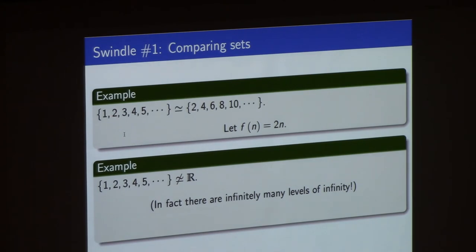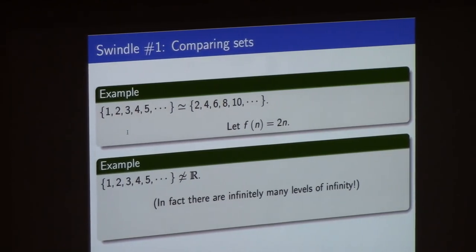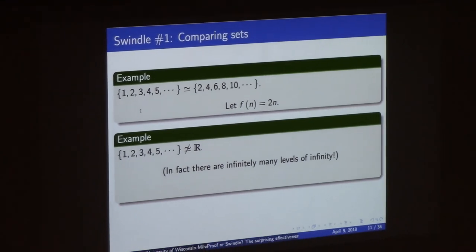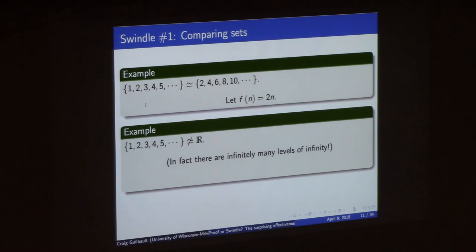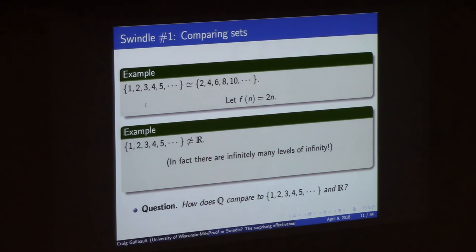You might start to believe all infinite sets must be the same size, but another famous fact due to Cantor is that the counting numbers and the real numbers are not the same size — no matter how hard you try, you'll never get a bijection between them. The next question is where do the rationals fit in? There are a lot more rationals than counting numbers, but many real numbers aren't rational, so the rationals fit somewhere between. Many of you know the answer: the rationals have the same size as one of those two sets. I think I can show you a proof different from what you've seen — we'll do it with an infinite swindle.